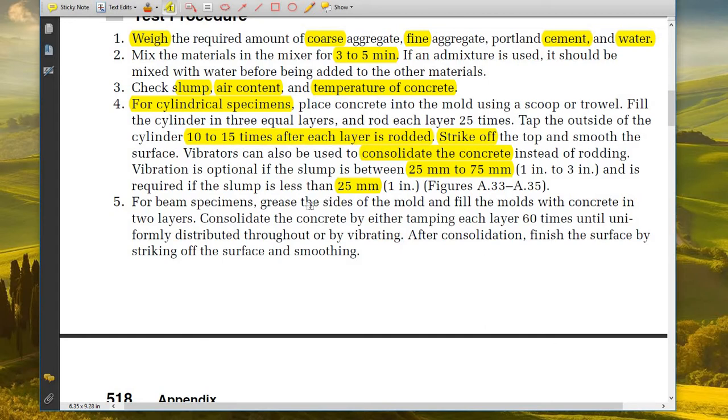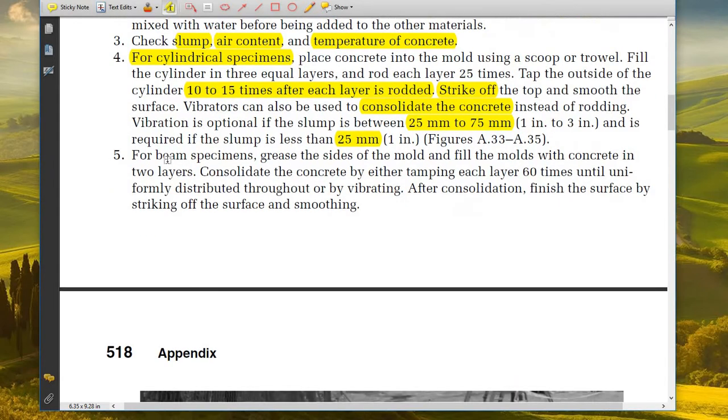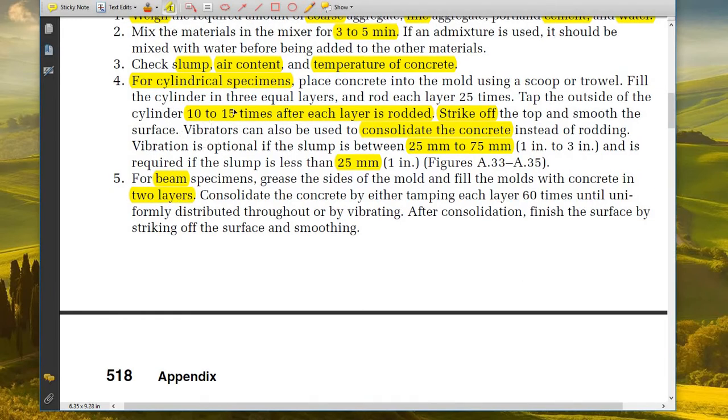For the case of beam specimens, grease the sides of the mold and fill the molds with concrete in two layers. Remember, in case of cylinders we use three layers; for beams it's two layers. After greasing the sides, consolidate the concrete by either tamping each layer 60 times until uniformly distributed throughout or by vibrating.